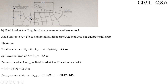Taking the datum as this line, the elevation head of point A is minus 8.5 meters, because A is below the datum. The elevation head of A is −8.5 meters. Pressure head at A equals total head at A minus elevation head of A, which is 4.8 minus (−8.5).